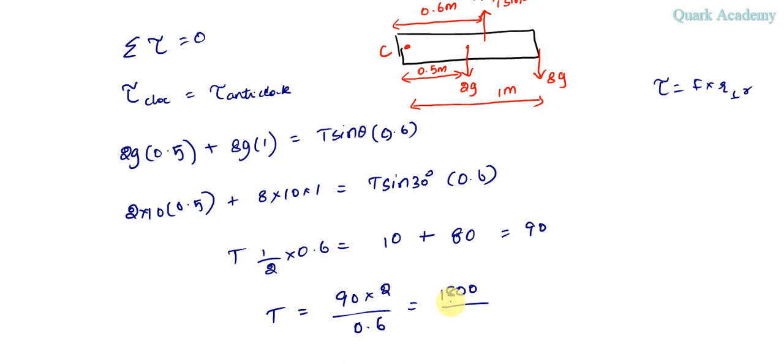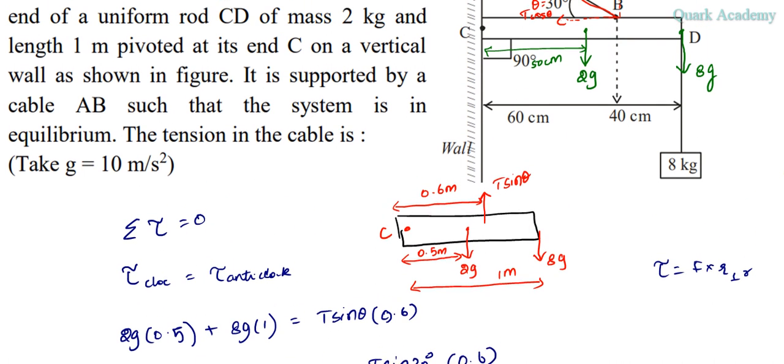Now T will become 90 into 2 divided by 0.6, so this is 180 divided by 0.6, which is 300 Newtons. So the tension in the cable is 300 Newtons.